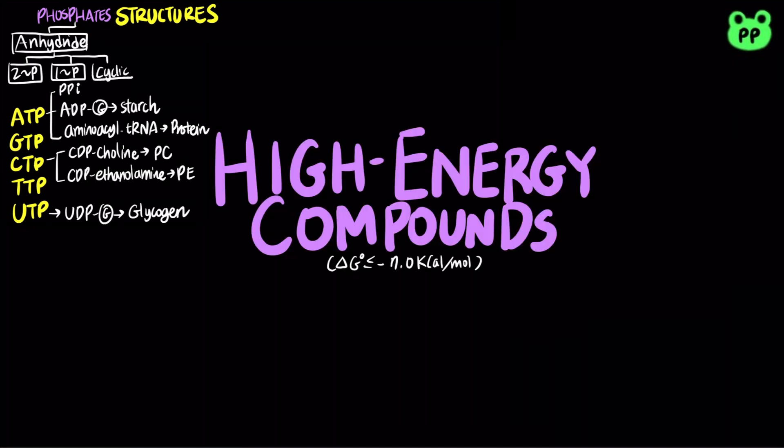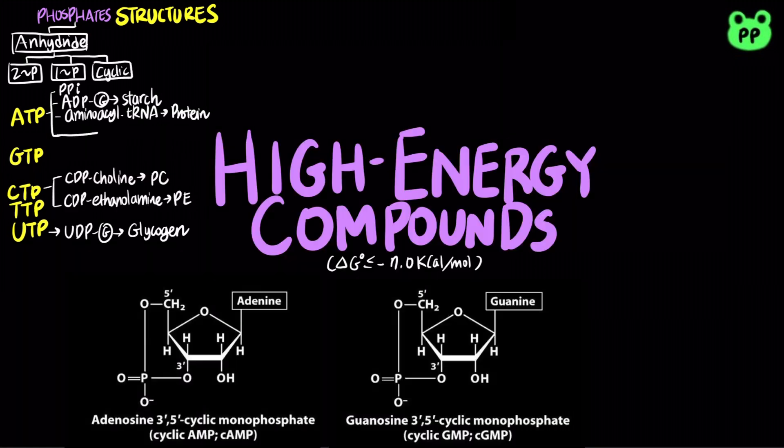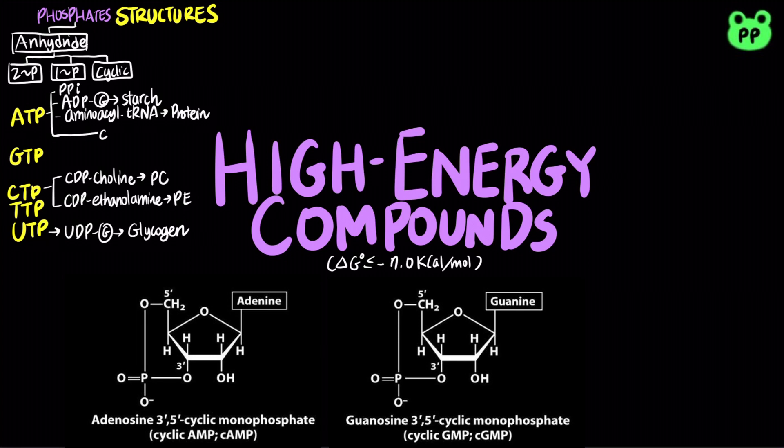Cyclic phosphoric anhydrides include cyclic AMP and cyclic GMP, both of which function in biosignaling. Cyclic AMP activates protein kinase A or PKA, while cyclic GMP activates protein kinase G or PKG.